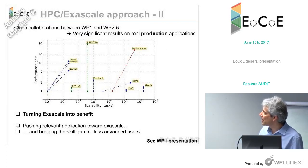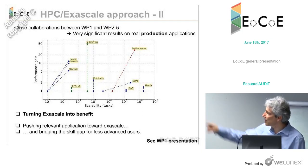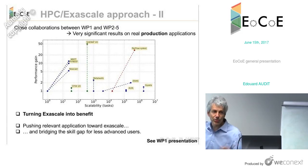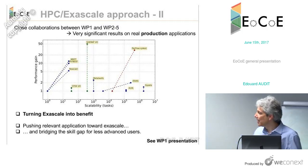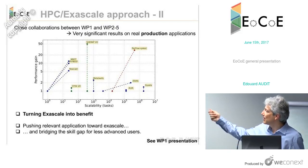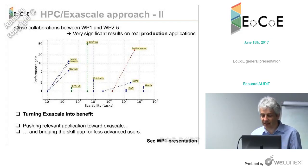Looking at the performance chart, the vertical axis shows single-core performance and the horizontal axis shows scalability. We have some very high-end codes ready for exascale that we are pushing to the extreme-scale demonstrator, and some codes less advanced in HPC but physically very relevant that we try to push as far as possible. The idea is really to turn exascale into benefits by pushing the most scalable applications toward exascale and trying to bridge the skill gap so other users also benefit from these new technologies.